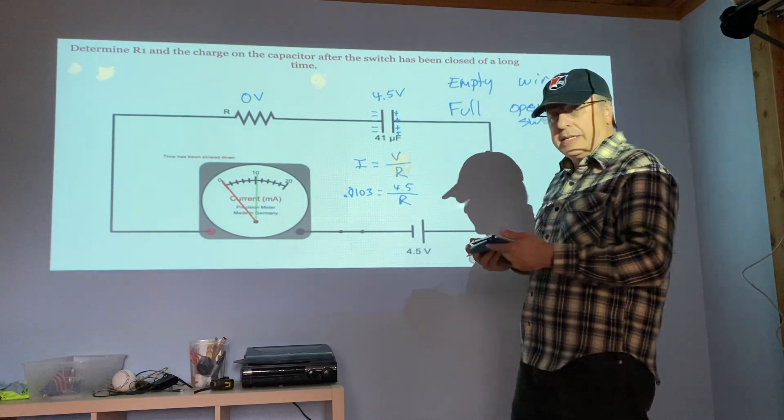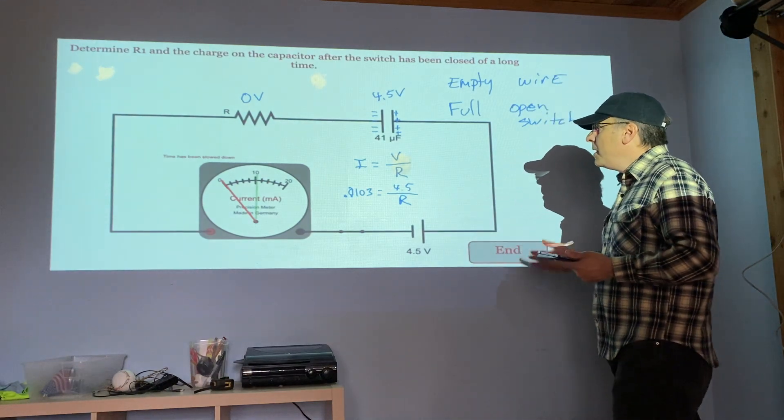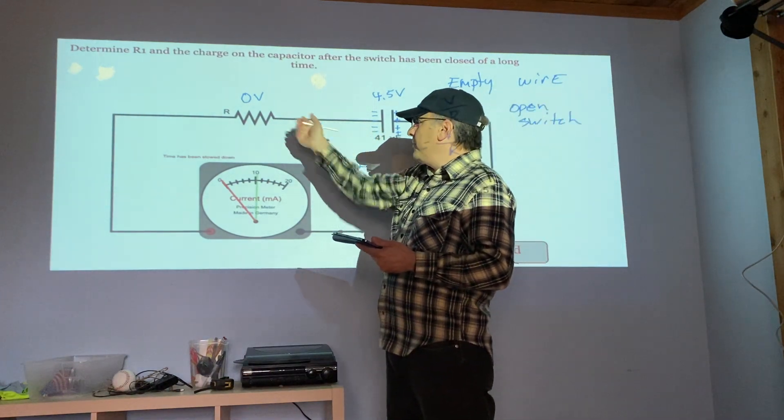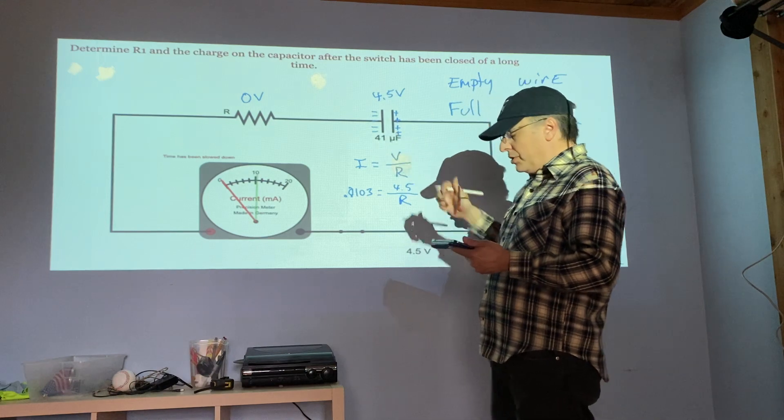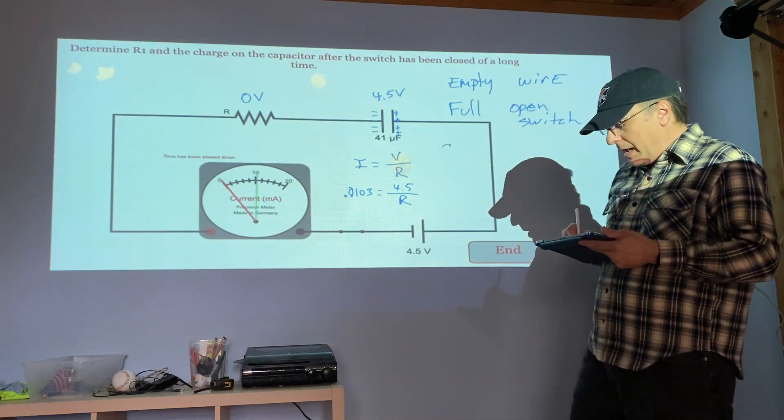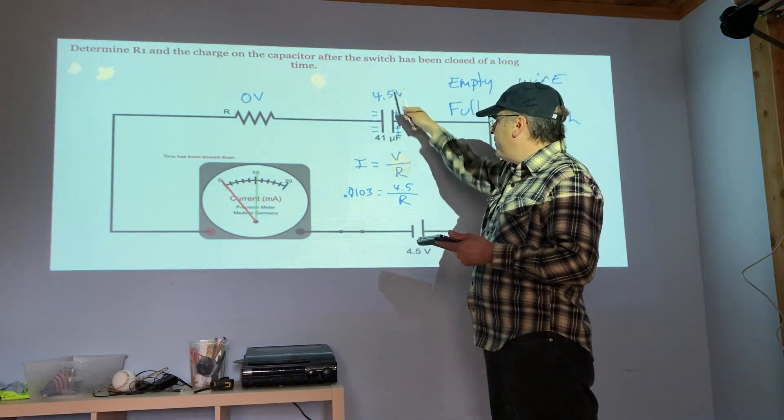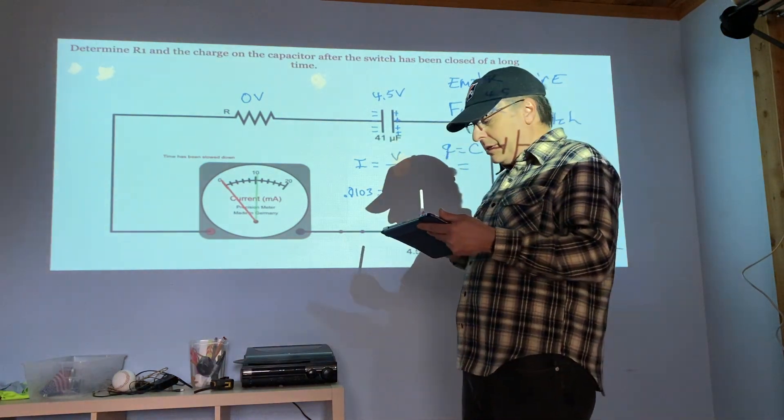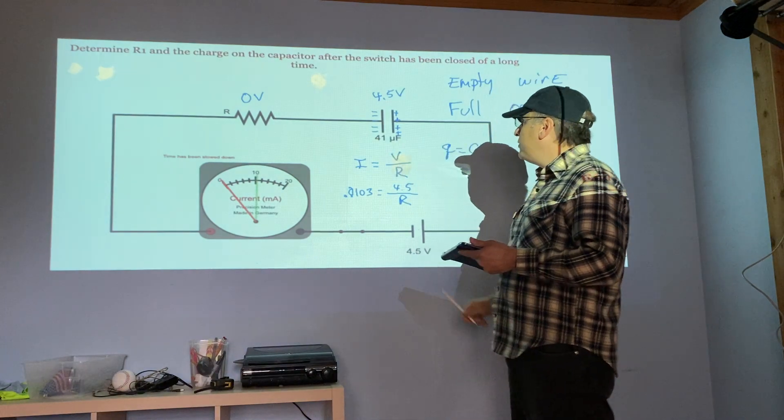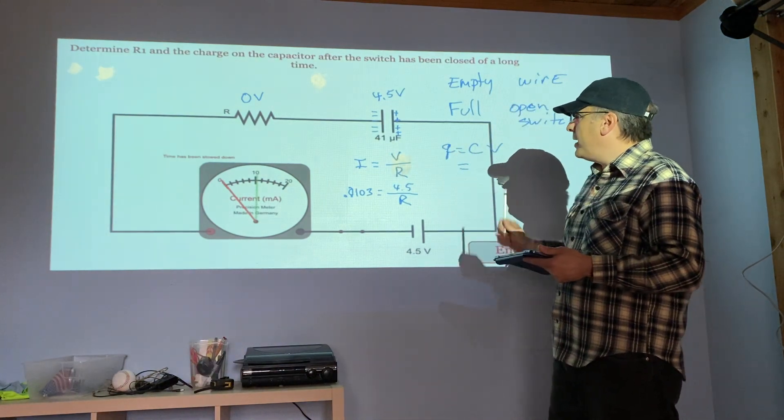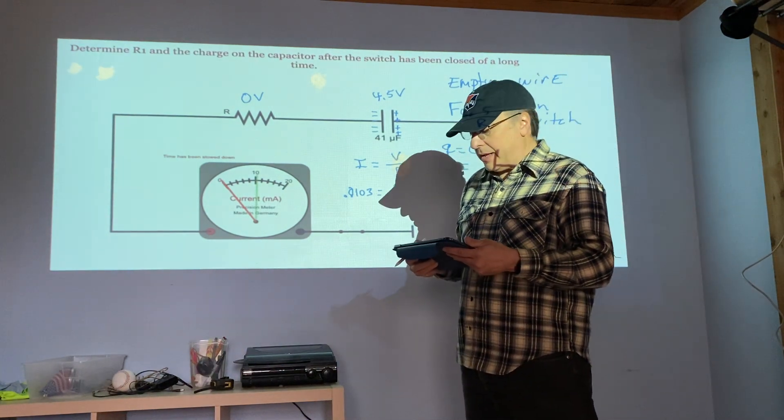And I solve for the resistance. That's how I get the resistance on the resistor. To get the charge on the capacitor, I do Q equals CV. I use the voltage of 4.5, that's when it's fully charged, I use the capacitance value and I can figure out how much charge I have stored on that capacitor.